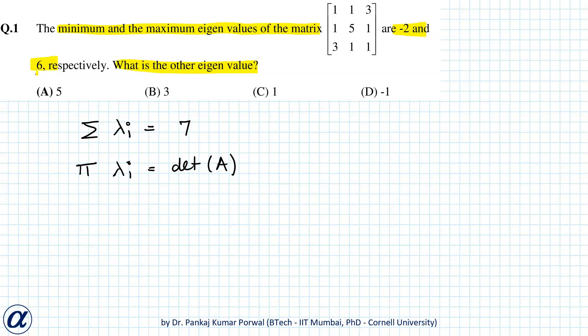So minus 2 plus 6 is 4. A cannot be the choice because that will give me sum 9. B is possible.